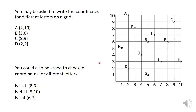You may also be asked to check coordinates for different letters. Is l at (8, 3)? Starting from the origin — 8 across, 3 up — no, l is not at (8, 3). Is h at (3, 10)? Starting from the beginning — 3 across, 10 up — no, h is not at (3, 10). And is i at (6, 7)? 6 across, 7 up — yes, i is at (6, 7).